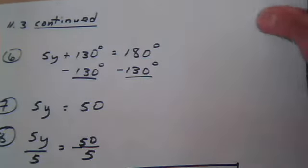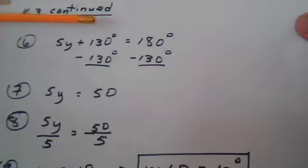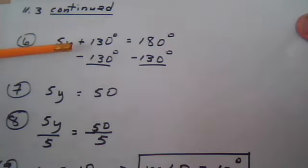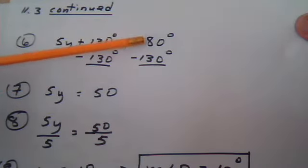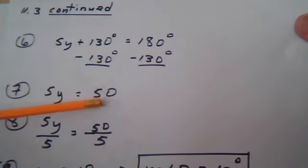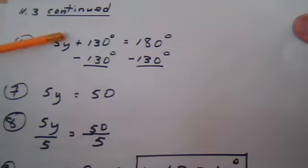So we get the 130 to the other side by subtracting. So we cancel this. But if you subtract 130 from one side of the equation, you have to subtract 130 from the other side. And 180 minus 130 equals 50. This 5Y is right here.